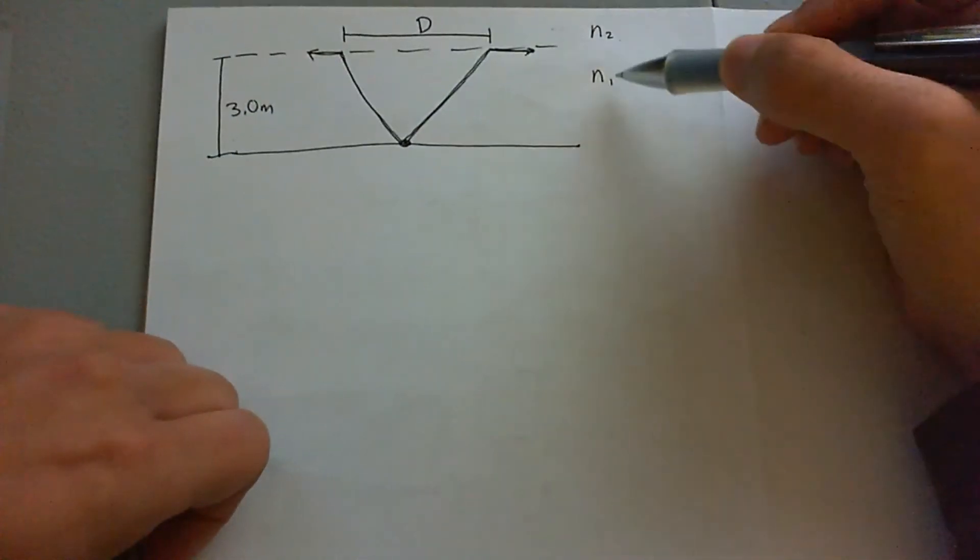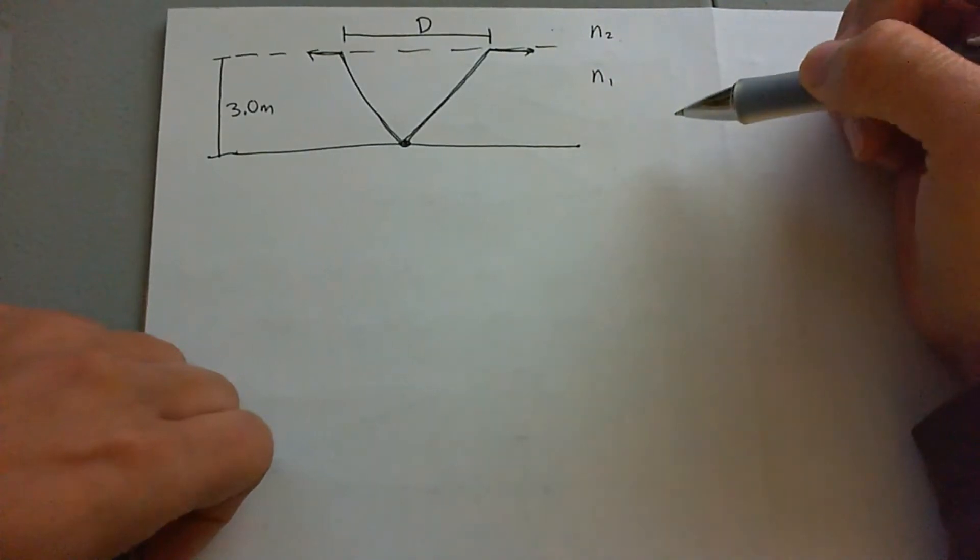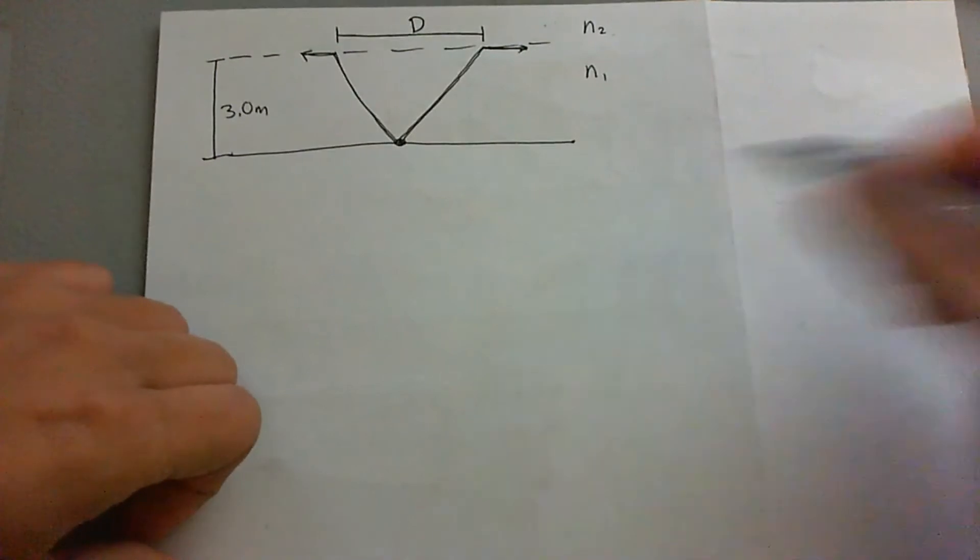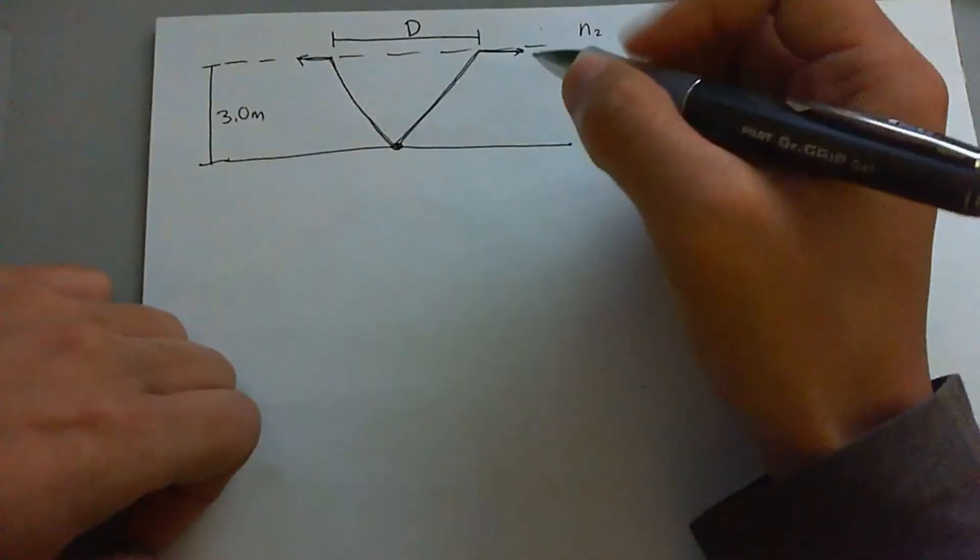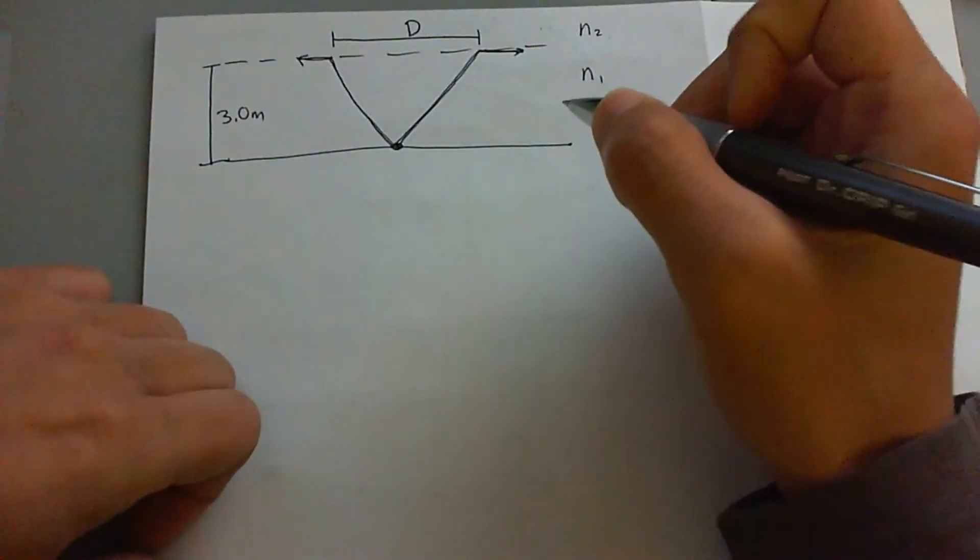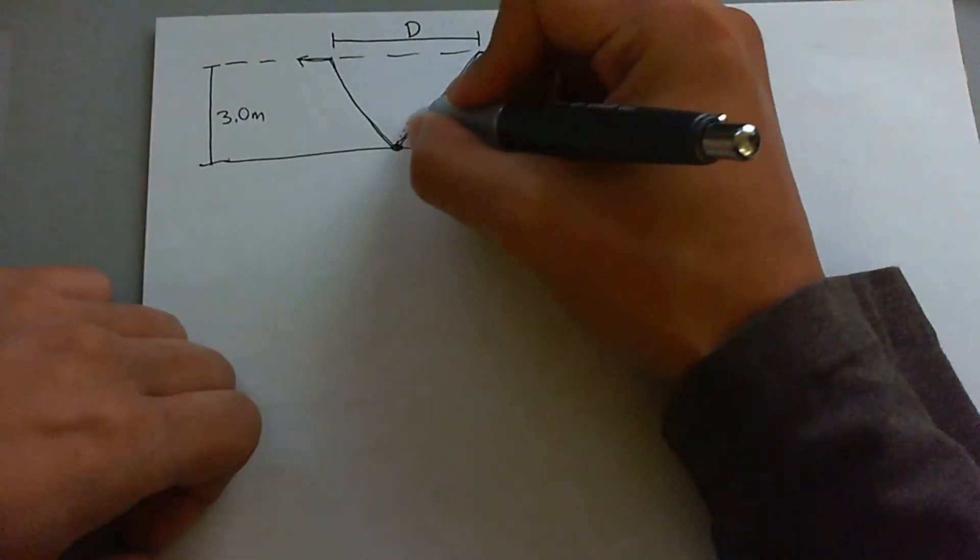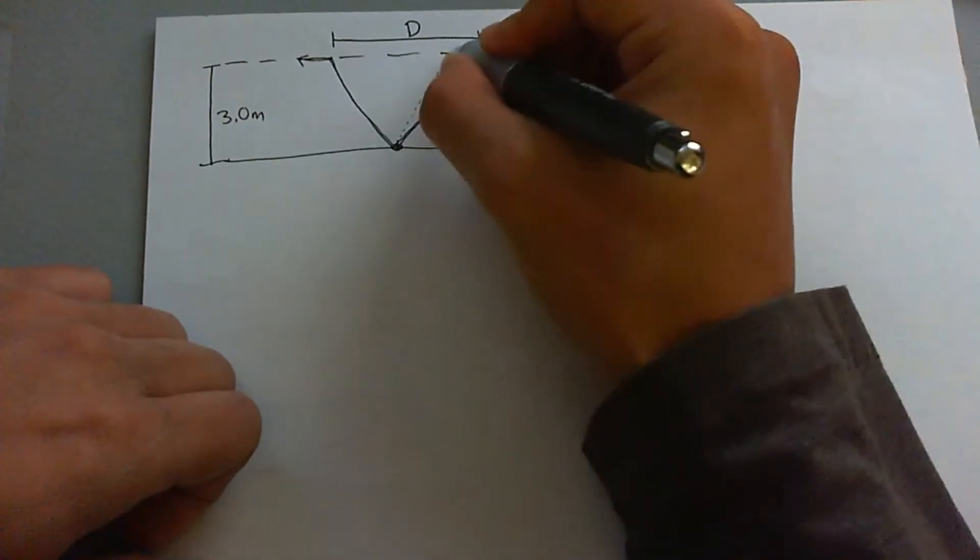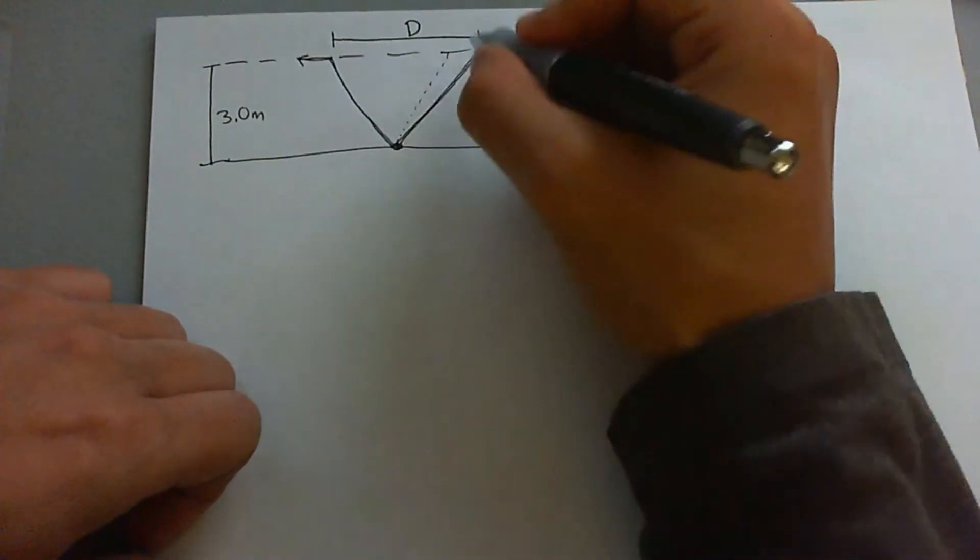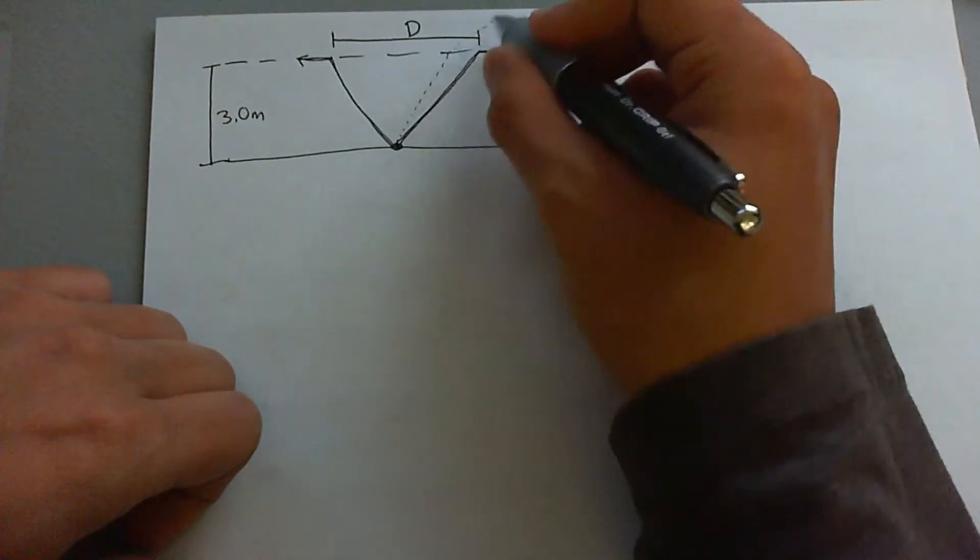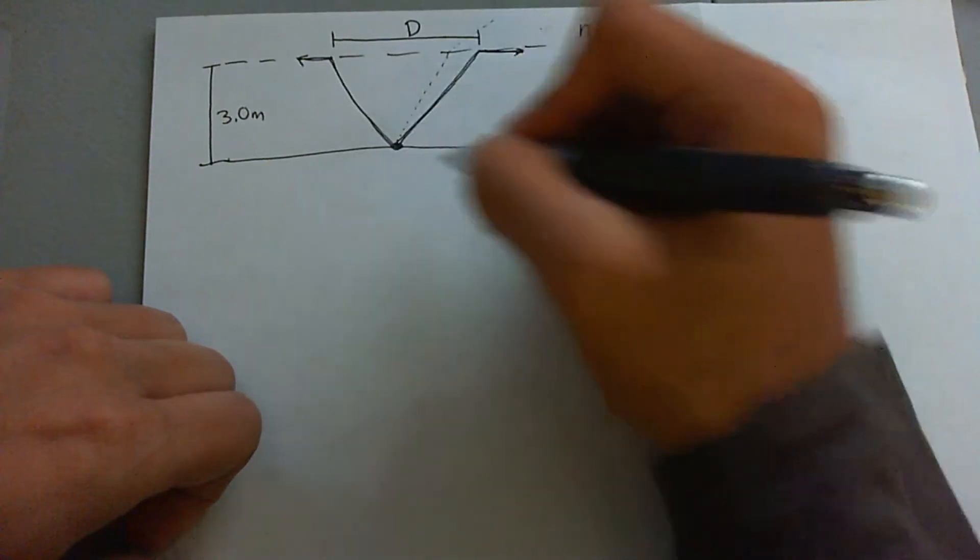You got N2, which is air, and N1, which is the water inside the pool. Now, the best way to go about this is to recognize total internal reflection. You see that if light were to come right here, say go up where the dotted line is, it will actually exit that pool. So you will see the light coming out from the bottom of the pool.